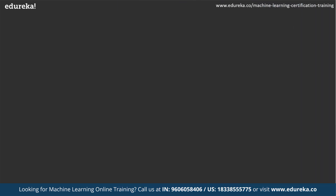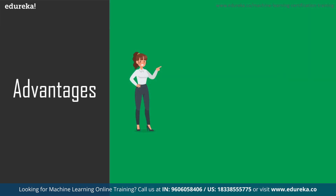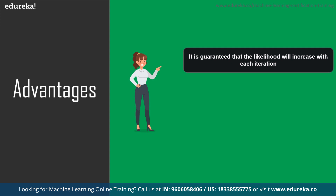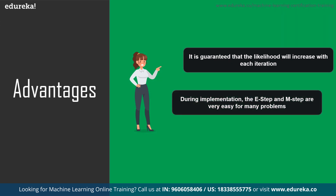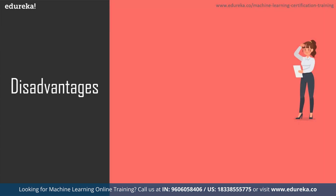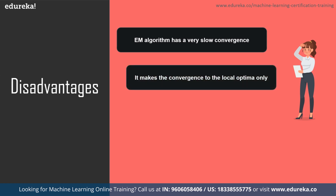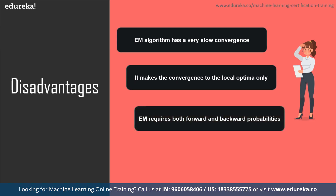Let's look at the advantages and disadvantages of EM algorithm. Advantages: it is guaranteed that the likelihood will increase with each iteration; the E step and M step are easy to implement for many problems; and the solution for the M step often exists in closed form. Disadvantages: EM algorithm has very slow convergence, it converges only to local optima, and it requires both forward and backward probabilities, which is a major setback.